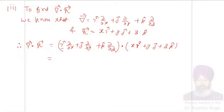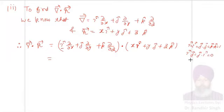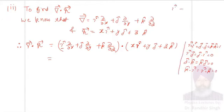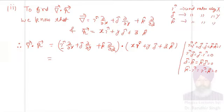Please remember that i-cap·i-cap = j-cap·j-cap = k-cap·k-cap = 1, while i-cap·j-cap = j-cap·i-cap = 0 because these are perpendicular to each other. Similarly j-cap·k-cap = k-cap·j-cap = 0, and k-cap·i-cap = i-cap·k-cap = 0. i-cap is a unit vector along x-axis, j-cap along y-axis, and k-cap along z-axis.